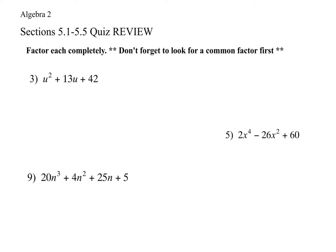For the first problem, I would say no — I can't take anything out, no variable, no number can come out of that. So I'm going to go straight to factoring. When my coefficient in the front is a one, I just have to look at that last term: what multiplies to give me the last number and also adds to give me the middle number. I have positive 42 and I want to add to get positive 13. So 6 and 7 multiply to give positive 42 and add to give positive 13. So the answer is (u + 6)(u + 7).